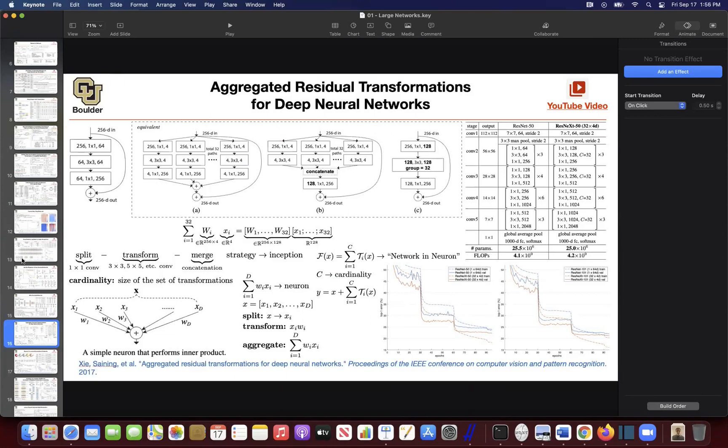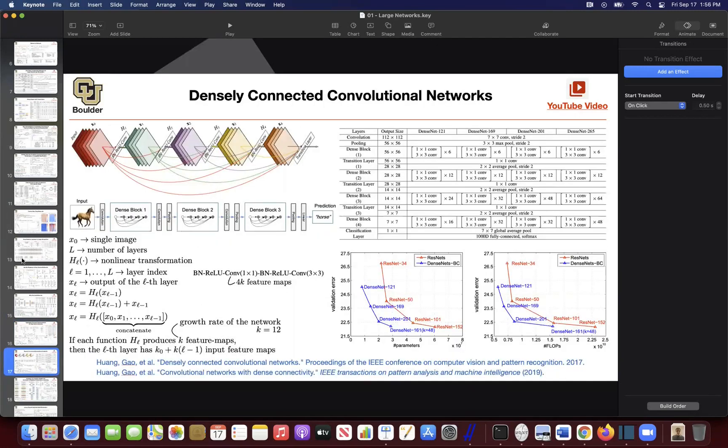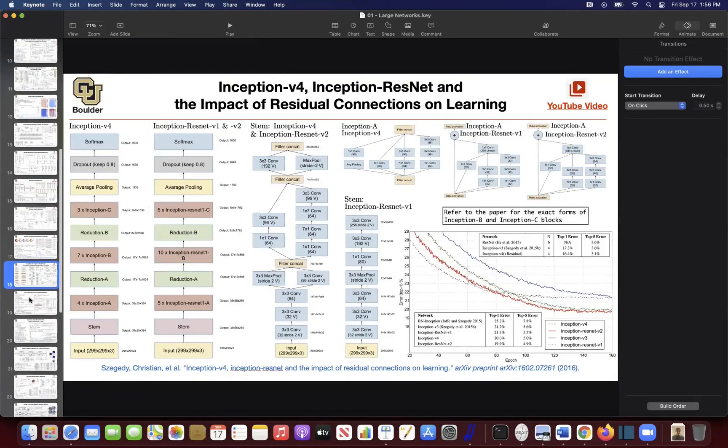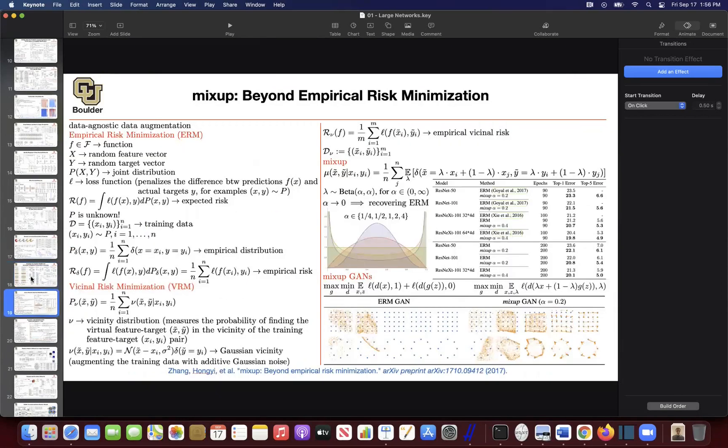We started worrying about efficiency of our neural networks. We introduced group convolutions and ResNeXt, which are more efficient than pure convolutions. Then we introduced DenseNets, which are an extension of residual connections. Inception v4 introduces the ideas of ResNets with other modifications. These are all about architectures.